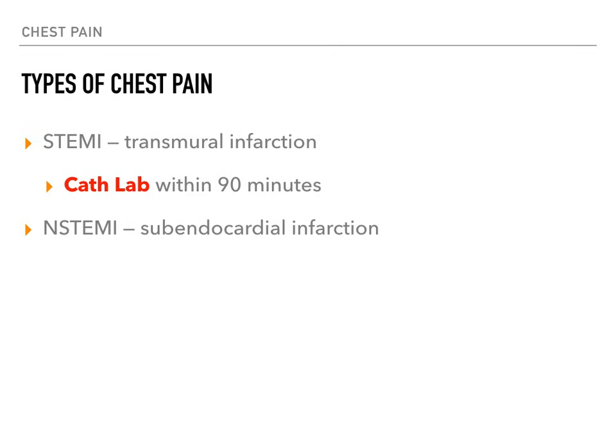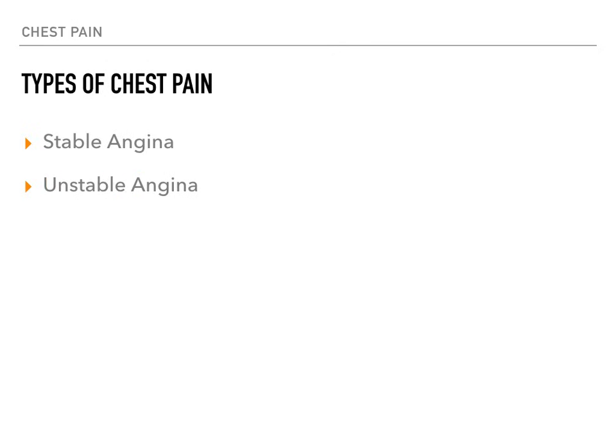Let's talk about angina. Stable angina is a demand mismatch, and unstable angina is also a demand mismatch. A STEMI, however, is a supply mismatch — there's 100% occlusion of a coronary vessel, and the heart cannot supply itself with enough blood. Anything else — stable angina, unstable angina, and NSTEMI — is a demand mismatch. That is why the STEMI is particularly lethal and why we have to get patients to the cath lab within 90 minutes.